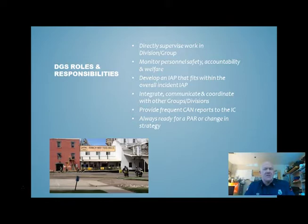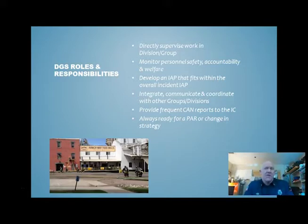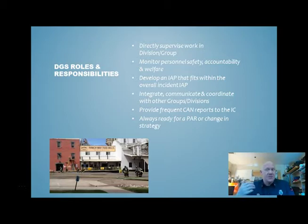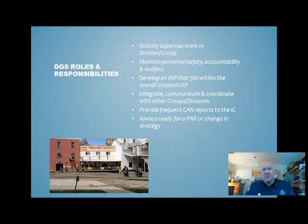Integrate, communicate, and coordinate with other groups and divisions — that takes constant communication. A good example is ventilation ops: even on a regular two-box fire, if we have an attack group and a support group, the attack group should be communicating with the support group. If the support group is talking about doing a vertical vent operation, they should check with the attack group and interior personnel to decide whether ventilation is warranted. We want to wait until we almost have — or do have — water on the fire before opening the roof. This also reduces radio traffic if division and group supervisors can have face-to-face conversations, cutting down radio traffic for the IC.